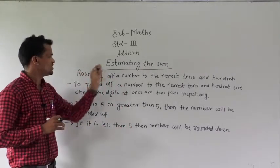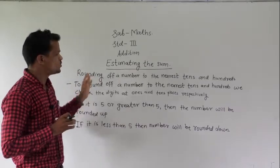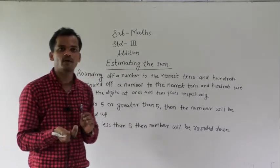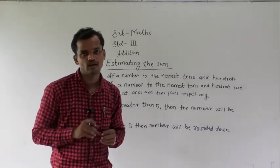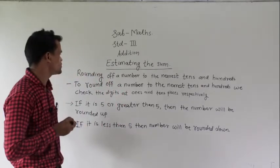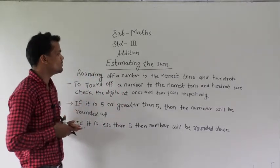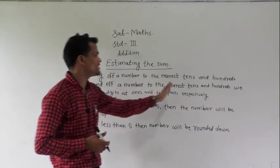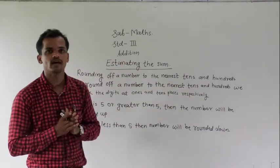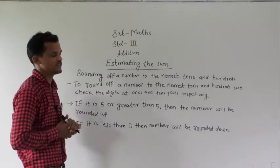To estimate the sum, there are two terms: rounding up and rounding down. We will understand them one by one. We will see rounding of a number to the nearest 10 and 100.